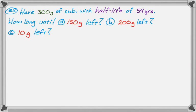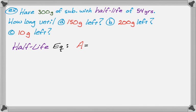Now let's solve a different type of problem. We have 300 grams of a substance with a half-life of 54 years, and we want to know how long until there's only 150 grams left, until there's 200 grams left, and until there's only 10 grams left. We need the half-life equation: A equals 300 times one-half to the T over 54. We'll substitute for A and solve for T.